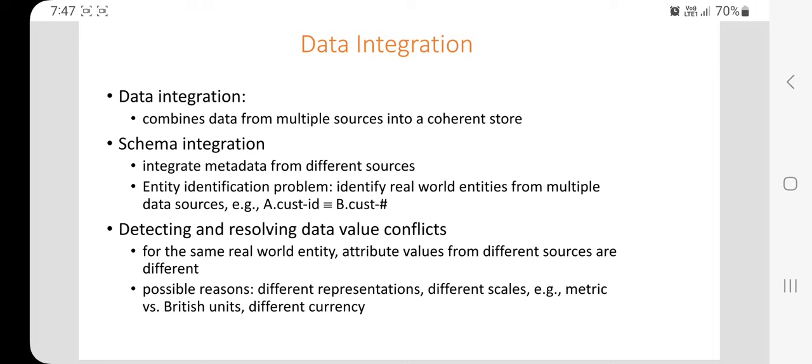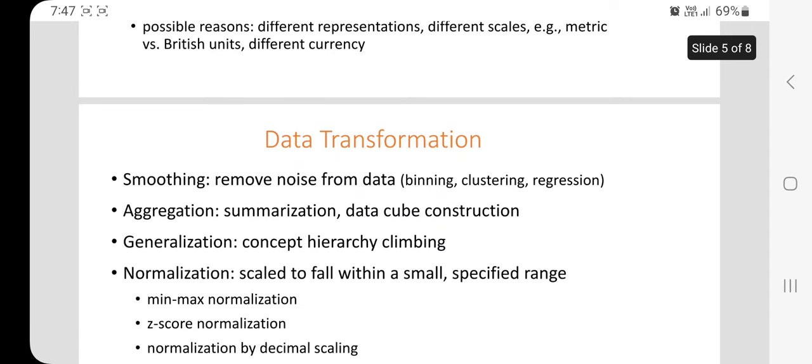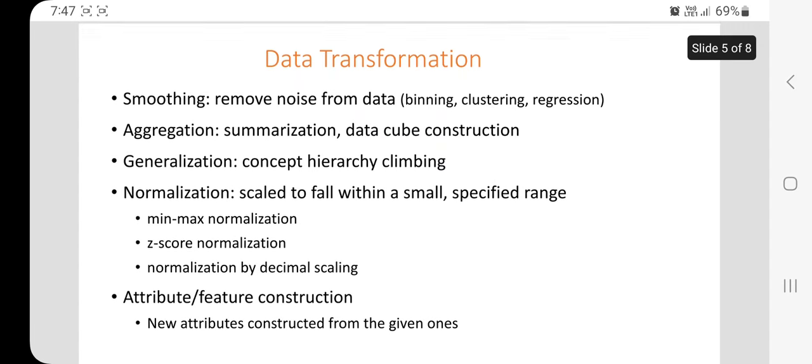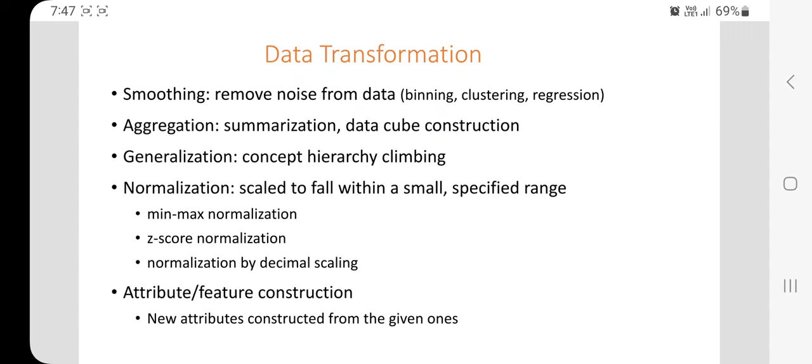A second aspect of data integration is detecting and resolving data value conflicts — where the same real-world entity has attribute values that differ across sources. For example, this can happen due to different representations or different scales, such as metric versus British units, or different currencies. This issue is handled by data integration.